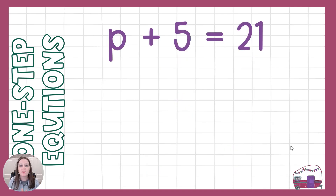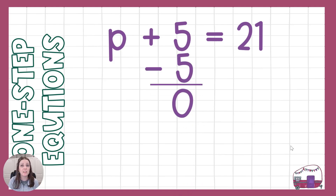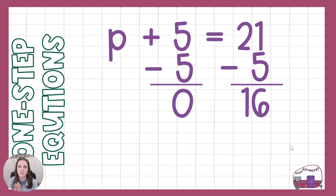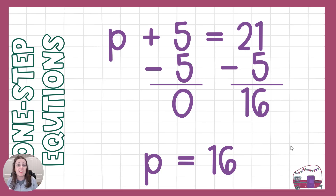Let's look at another one. This time we have p plus 5 equals 21. Same goal: get the variable all by itself, get that p alone. I'm going to use the inverse — the opposite of positive 5 — which is minus 5. That makes 0; now it's gone. But everything isn't the same anymore, so I go to the other side of my equal sign and do the same thing. 21 minus 5 is 16. Now everything is the same, and p equals 16. Plug it back in: 16 plus 5 is 21. We're good.